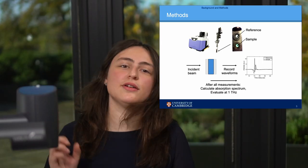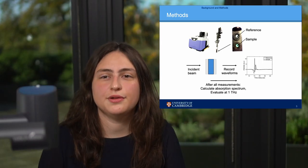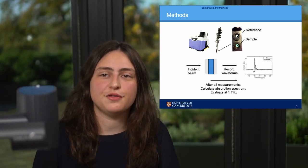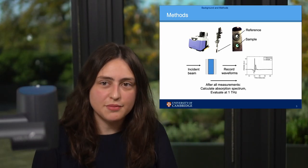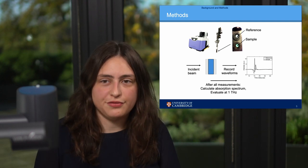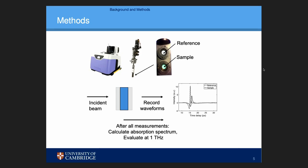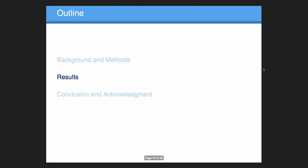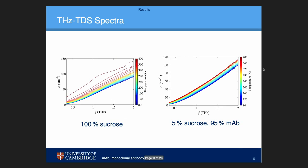We look at the samples using a TerraView TeraPulse 4000 spectrometer. We record both the reference and the sample waveforms, and then we can calculate the absorption spectrum at each temperature. We vary the temperature between 80 and 400 Kelvin. That leads directly to the results.